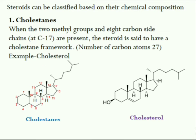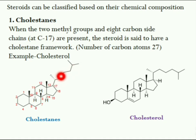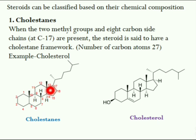Steroids can be classified based on their chemical composition. The first category is cholestans. When two methyl groups and an eight-carbon side chain at the C-17 position are present, the steroid is said to have a cholestan framework. These compounds generally have 27 carbon atoms. For example, cholesterol.